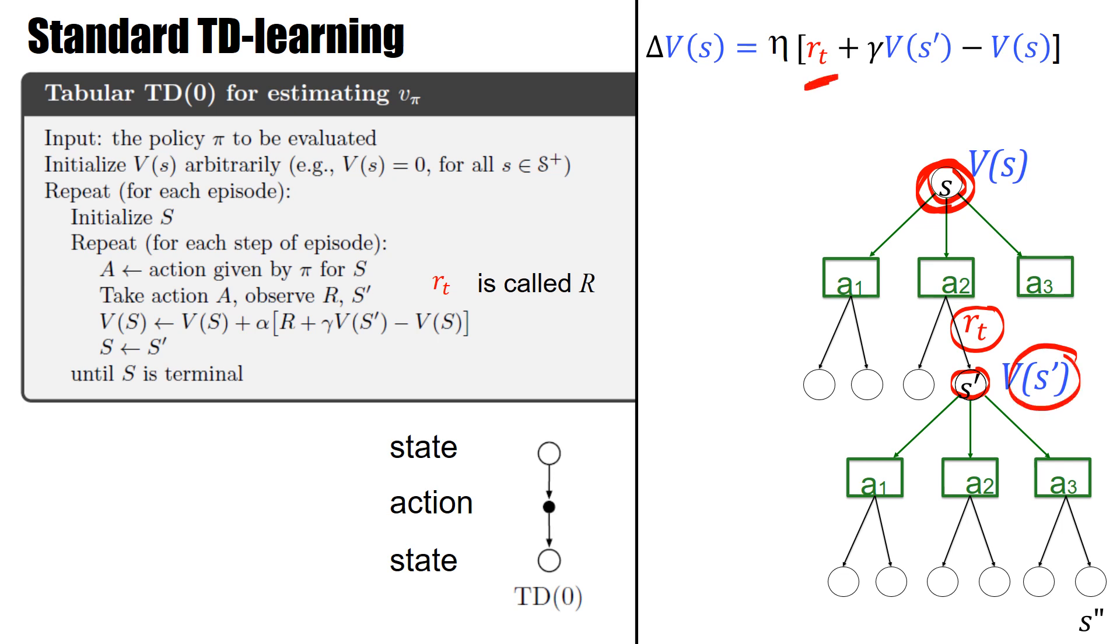And if the actual reward is larger than this difference, then you should update this value V of S, so it's a delta V of S, which is positive. And so this is now this online algorithm where you initialize, you start in some state, you take an action, which means you're now here. And then you observe the reward, you observe the next state, and then you do the update step that I just discussed.